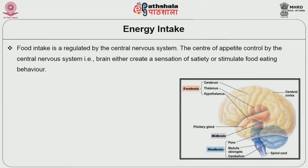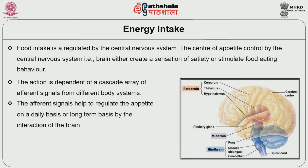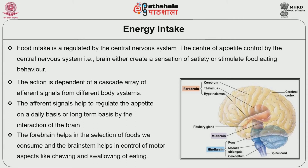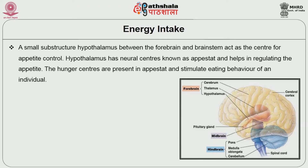Energy intake: food intake is regulated by the central nervous system. The center of appetite controlled by the CNS, i.e., the brain, either creates a sensation of satiety or stimulates food eating behavior. The action is dependent on a cascade array of afferent signals from different body systems. The afferent signals help to regulate the appetite on a daily basis or long-term basis by the interaction of the brain. The forebrain helps in the selection of foods we consume and the brain stem helps in control of motor aspects like chewing and swallowing. A small substructure, the hypothalamus, between the forebrain and brain stem acts as the center for appetite control.